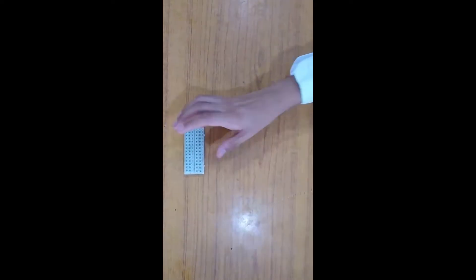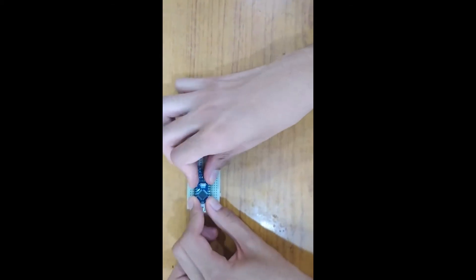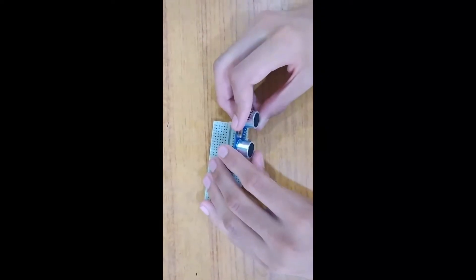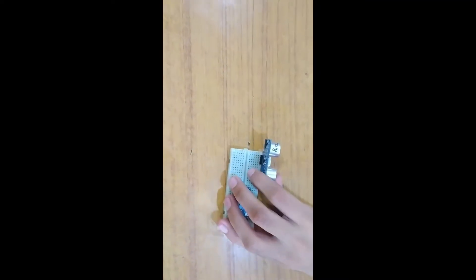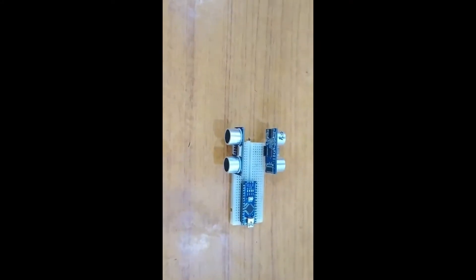Now it's time for the connections. First, we will take a breadboard. Then, we will insert our Arduino Nano inside this breadboard. The next step will be to insert two ultrasonic sensors horizontally in this breadboard. Then, we will connect them.